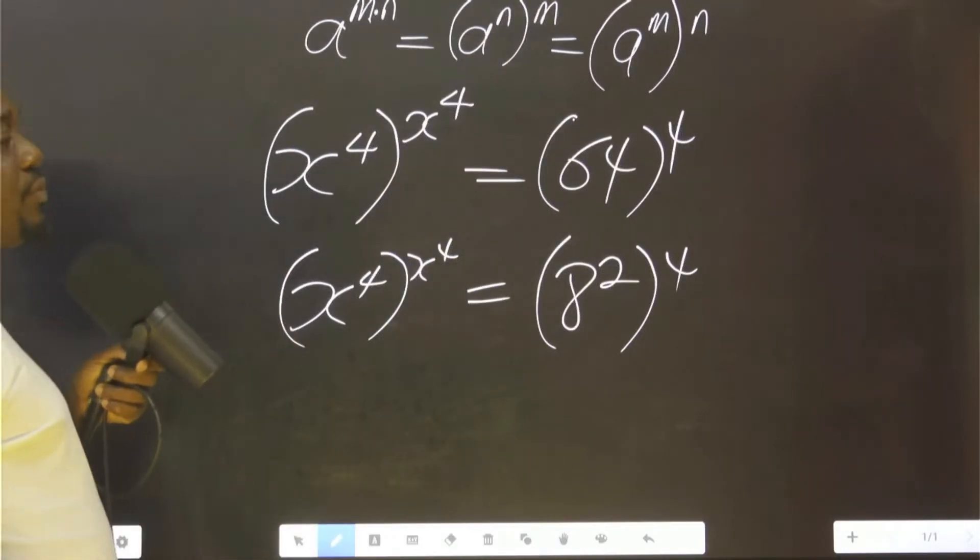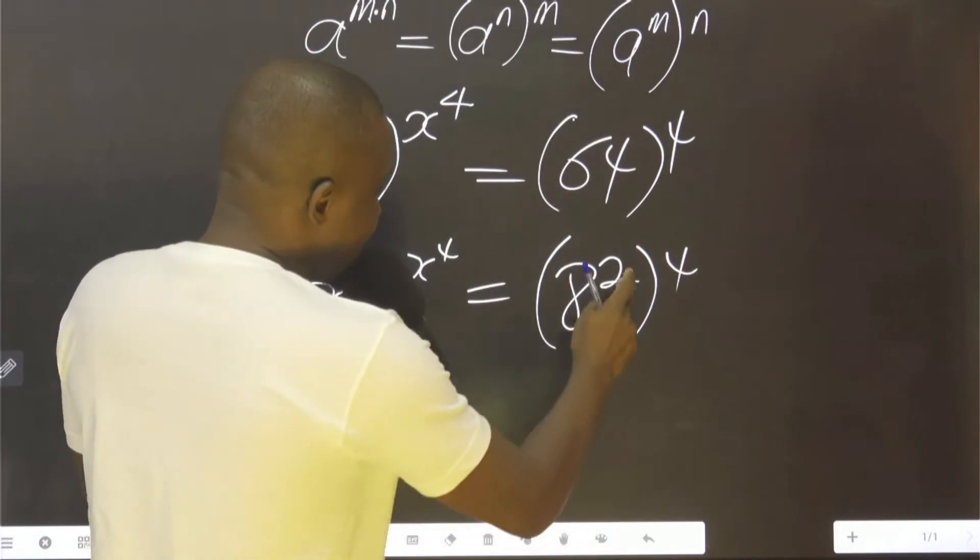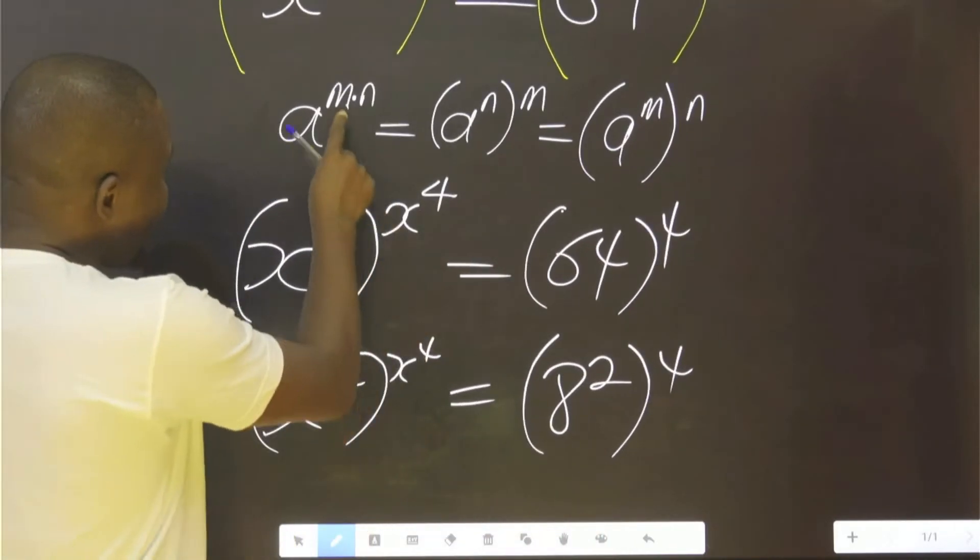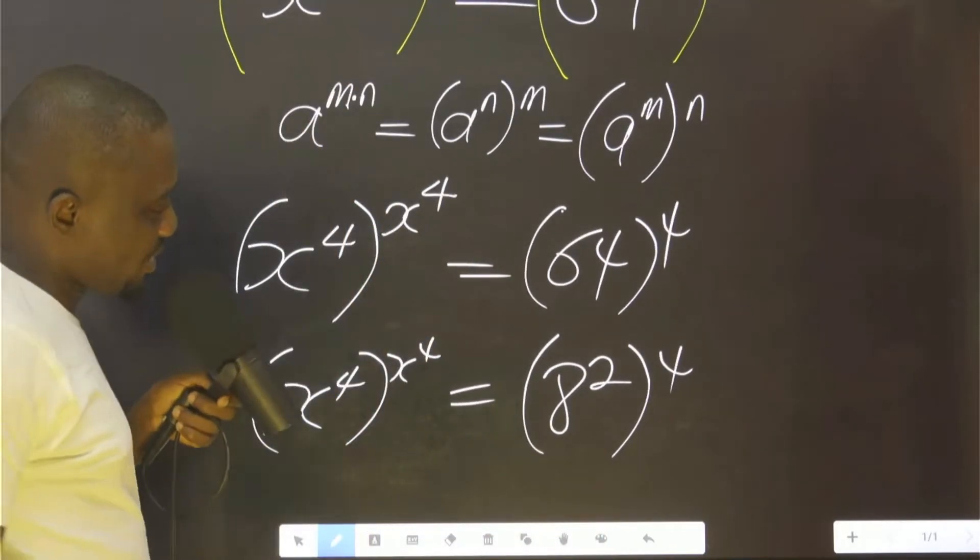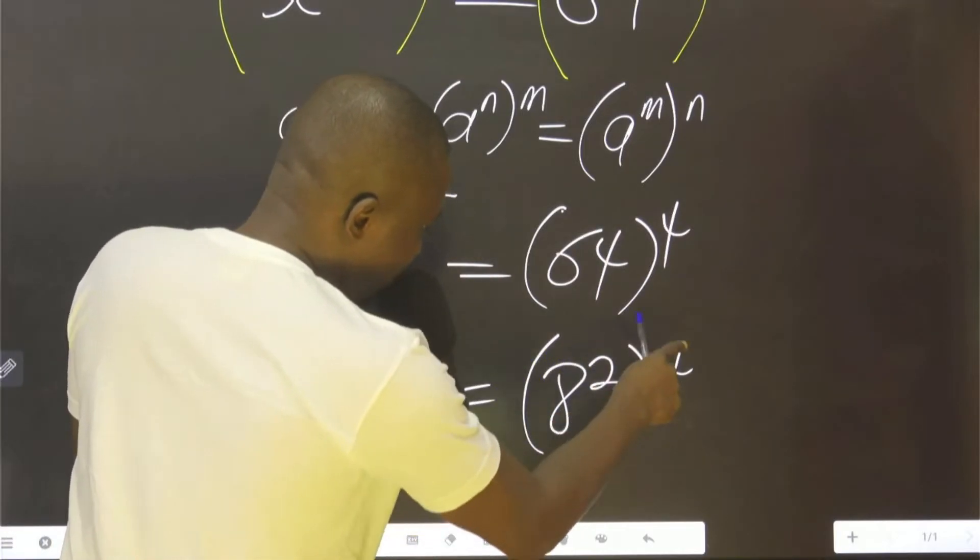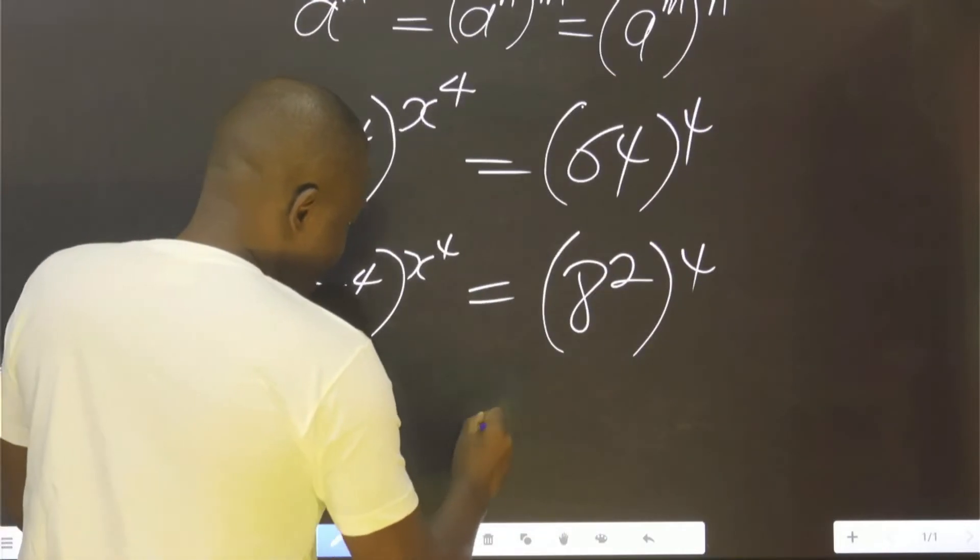So what is the meaning of this? Remember, in this place we have agreed that this is m multiplied by n. This also means 2 multiplied by 4, which is 8.